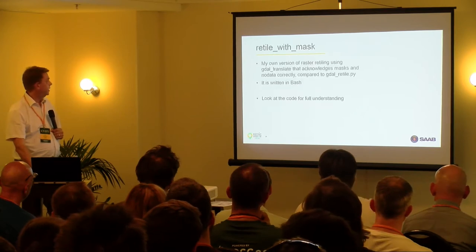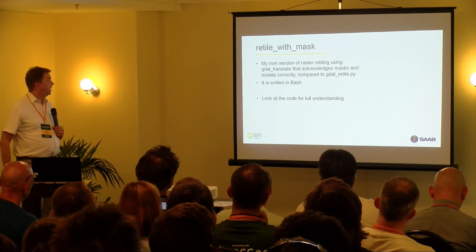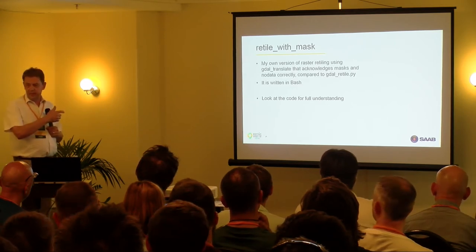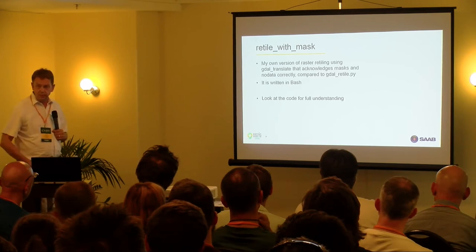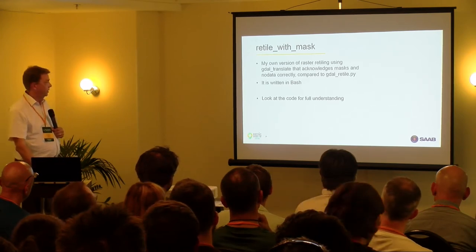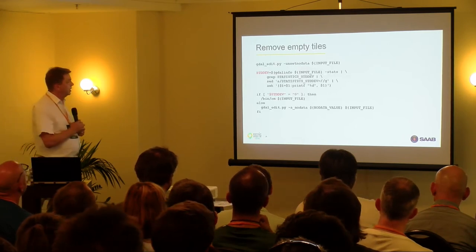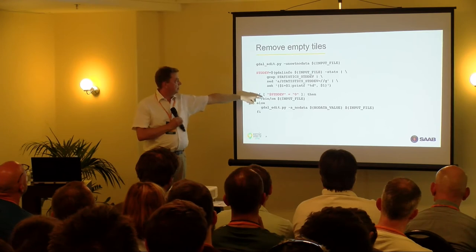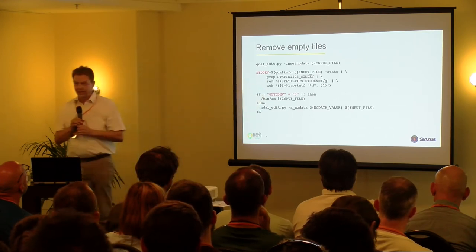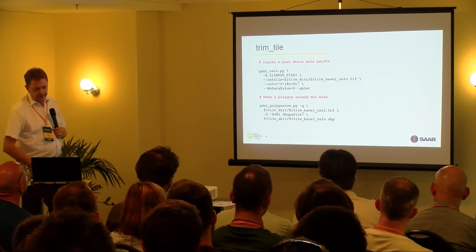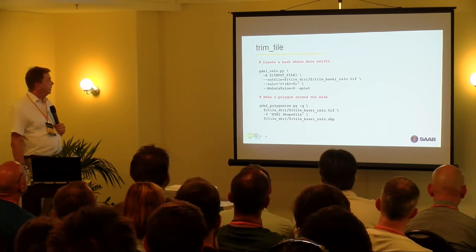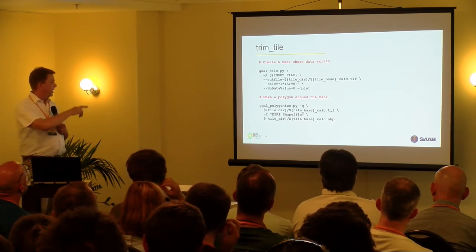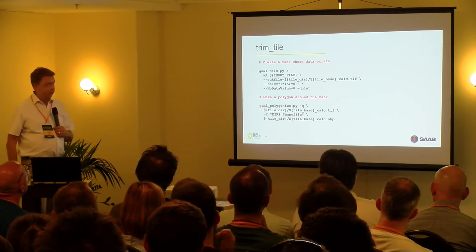The full code example is found at 'Import raster retile' on my Gist. I did my own version of retiling with a mask because gdal_retile is not handling no-data properly, so I rewrote it in bash. I remove empty tiles by unsetting no-data, running statistics on the tile, and if the standard deviation is zero, I remove the tile. Then I trim the tiles: I create a mask with gdal_calc around where there's data, then make a polygon around the mask with gdal_polygonize.